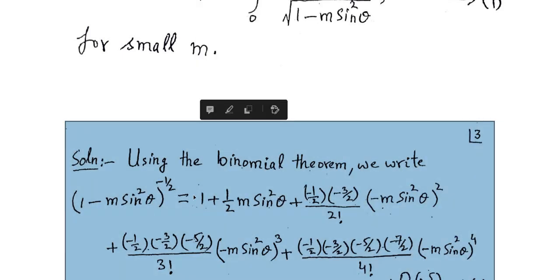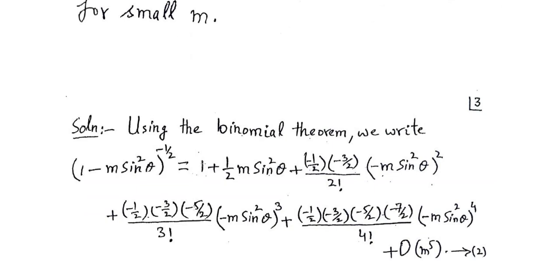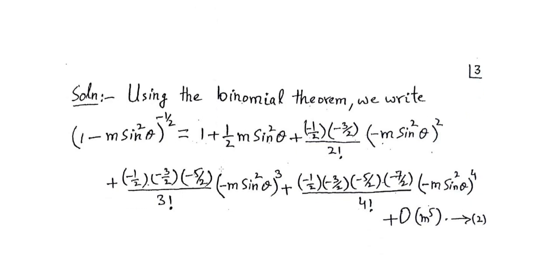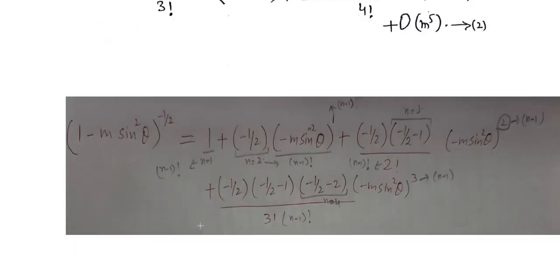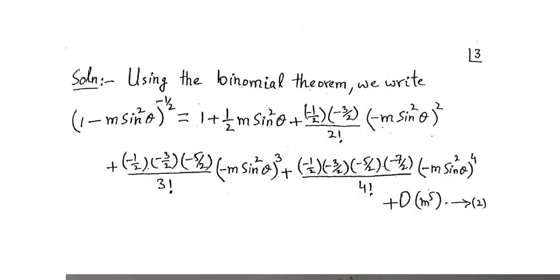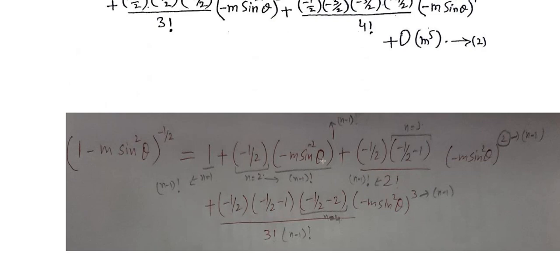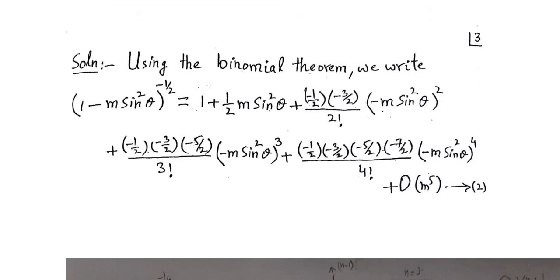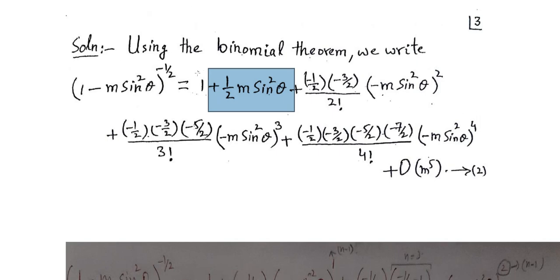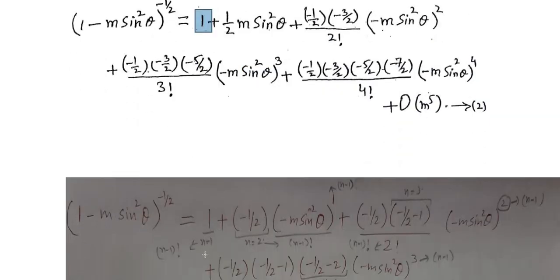With the help of the binomial theorem, the expansion of (1 − m sin²θ)^(−1/2) gives: 1, plus n·B for the first-order term, where B = m sin²θ. The first term corresponds to n=1 with zero factorial in the denominator, giving (1/2)·m sin²θ as the second term.